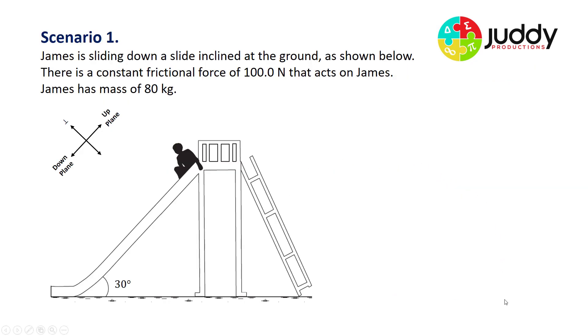Scenario one: James is sliding down a slide inclined at the ground as shown below. There's a constant friction force of 100 newtons that acts on James and James has a mass of 80 kilograms, so this is all represented in our diagram.